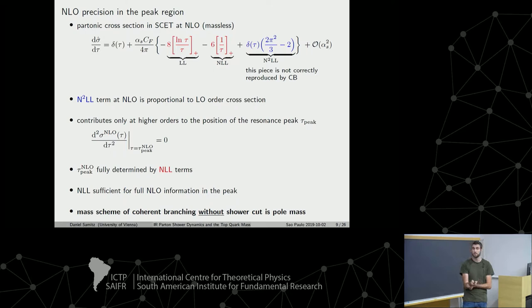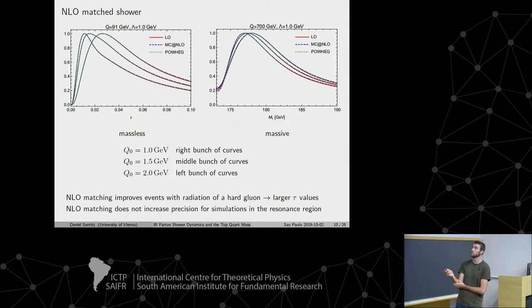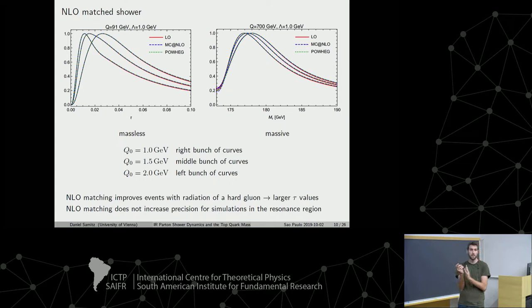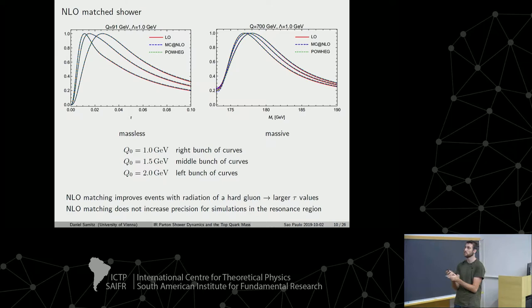This can also be seen from a plot where different bundles of curves correspond to runs with different shower cutoffs. Different colors correspond to different parton shower matching schemes: red is the standard parton shower without additional matching at next-to-leading log accuracy, while blue and green are parton showers matched with additional fixed-order next-to-leading order information. In the peak region all three colors are exactly on top of each other, confirming that the next-to-leading order matching is not needed for next-to-leading log precision on the peak.